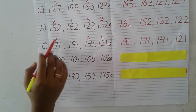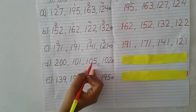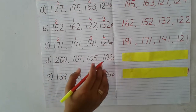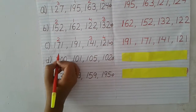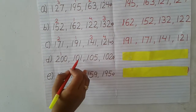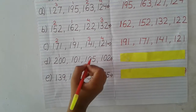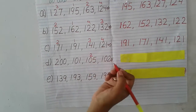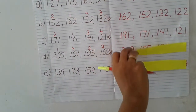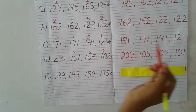Now we will cross-check another set: 200, 101, 105, 102. Here the hundreds place is 2, 1, 1, 1. Since 2 is bigger, 200 is first. Now for the remaining, the tens place is all 0, so we go to the ones place: 1, 5, 2. The biggest is 5, so 105 is second. Then 2, so 102 is third. Last is 101. The answer is: 200, 105, 102, 101.